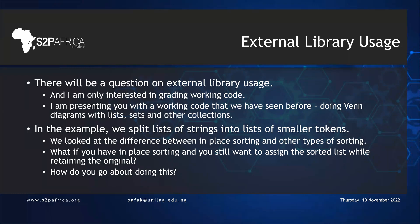In the example, we split lists of strings into lists of smaller tokens. We looked at the difference between in-place sorting and other kinds of sorting. What if you have in-place sorting and you still want to assign the sorted list while retaining the original? We know the list class provides in-place sorting, but suppose that is not what you want. How can you compel your code to do out-of-place sorting — sorting and creating a new sorted list while keeping the unsorted original?